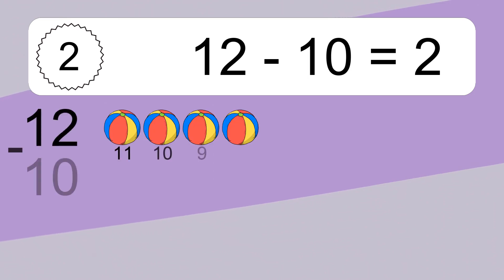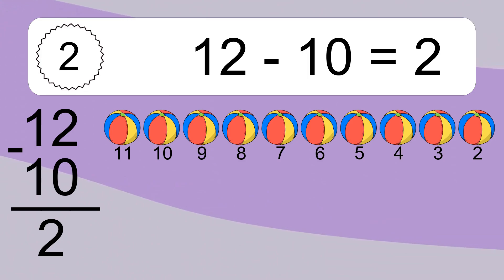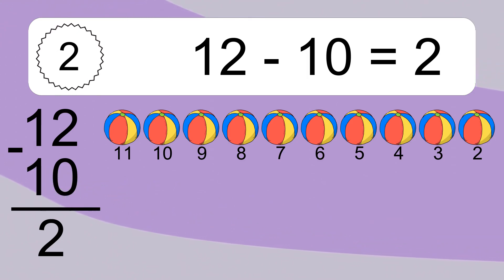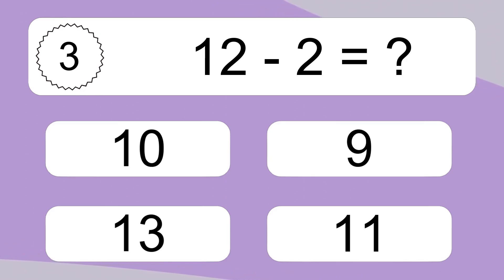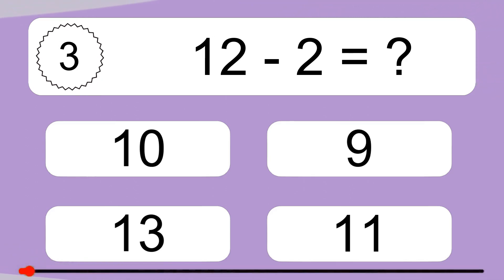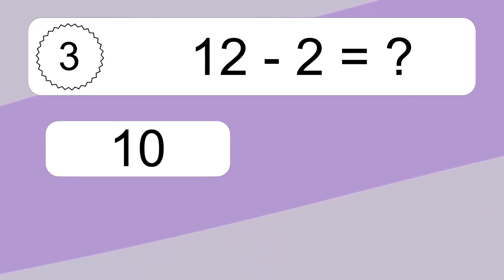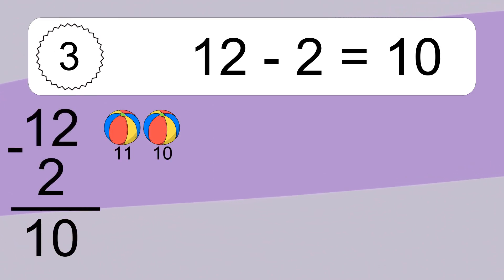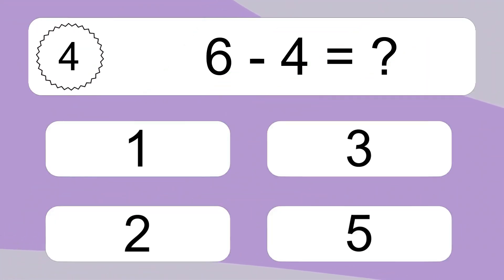12 minus 10 equals what? 12 minus 10 equals 2. Let's count it: 11, 10, 9, 8, 7, 6, 5, 4, 3, 2. 12 minus 2 equals what? 12 minus 2 equals 10. Let's count it: 11, 10.